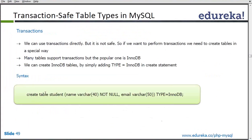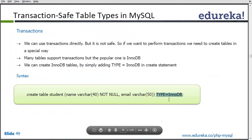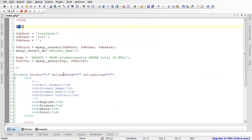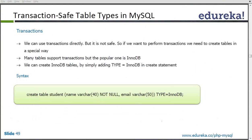Here you can see we are using CREATE TABLE student, giving the column name, column type, size, NOT NULL, email, column type, size, and then the type of table. Here we are giving TYPE equal to InnoDB. If we don't give this type and we are using MySQL 5.6, it will automatically default to InnoDB. If we are using earlier versions, it will take MyISAM. InnoDB tables are most preferred because they support transactions and referential integrity such as foreign key constraints.